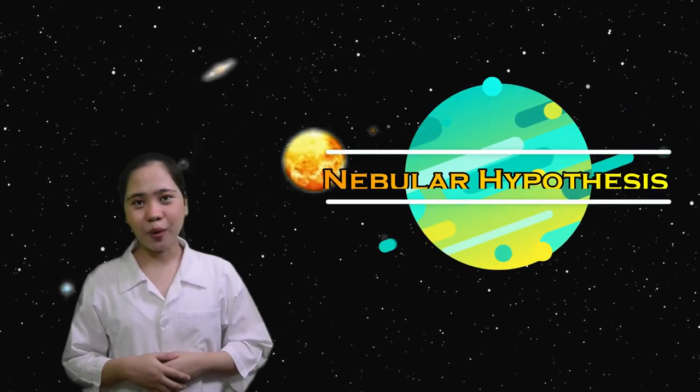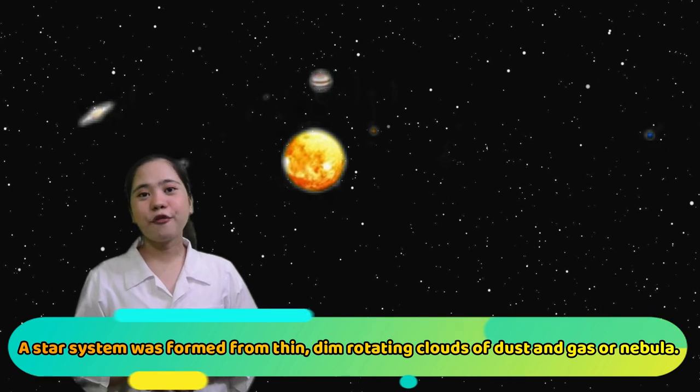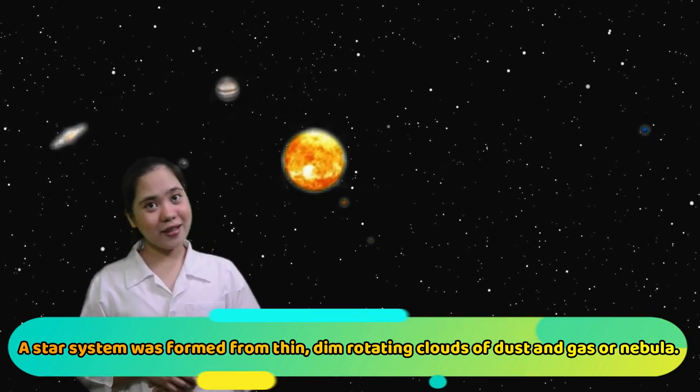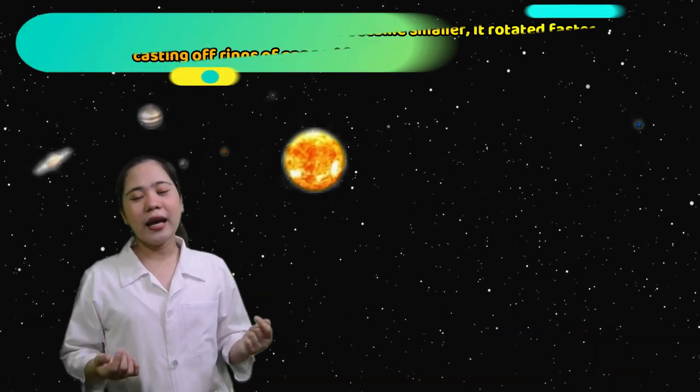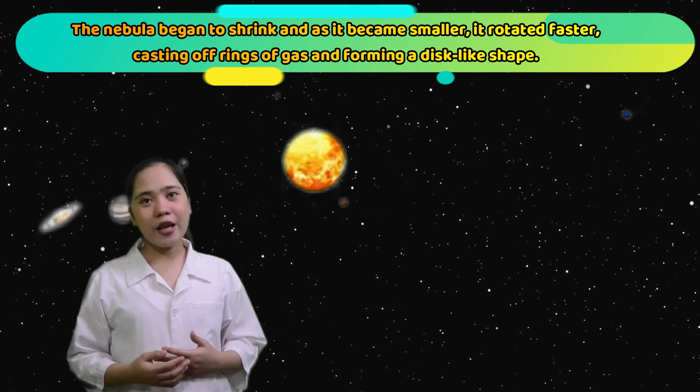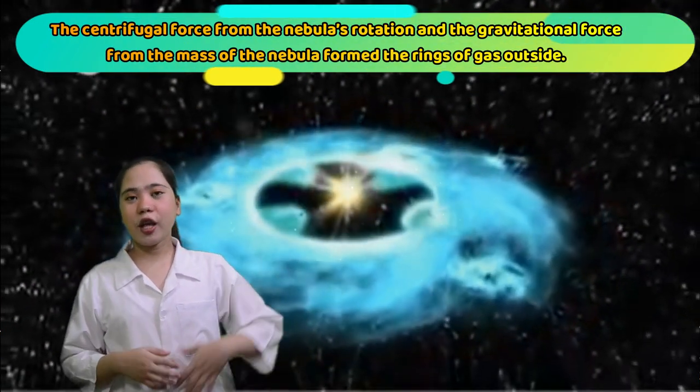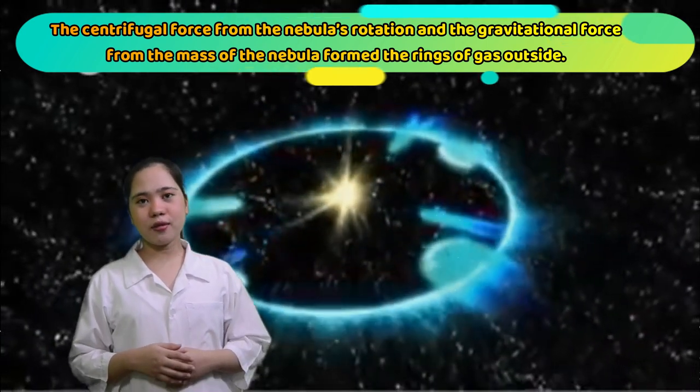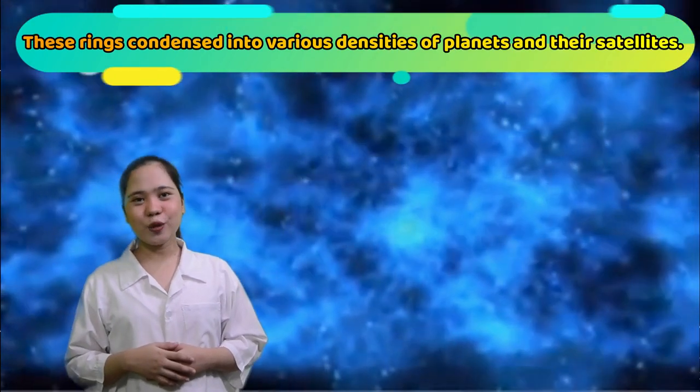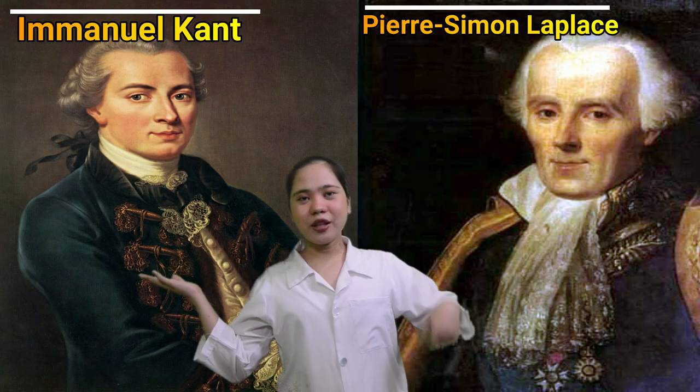This is a Nebula Hypothesis. And it is the most widely accepted model in the field of cosmology to explain the formation and evolution of the Solar System. In this theory, a star system was formed from the baking clouds of dust and gas, or a Nebula. When gas cooled, the Nebula began to shrink, and as it became smaller, it rotated faster, casting off rings of gas and forming a disc-like shape. The centrifugal force from the Nebula's rotation and the gravitational force from the mass of the Nebula formed the rings of gas outside. These rings condensed into various densities of planets and their satellites. And it was developed by Emanuel Kant and Pierre-Simon Laplace in the 18th century.